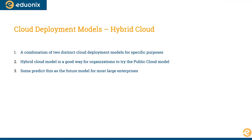The next thing is hybrid cloud, which is quite simple — it's a combination of two distinct cloud deployments, typically private and public cloud. The hybrid cloud model is a good way for organizations to try out the public cloud. If you have your own servers and want to try Microsoft Azure, the hybrid model lets you establish connectivity between your private cloud and a public cloud without moving everything there. You keep certain workloads on the public cloud, and once your technical team is comfortable, you can slowly migrate more.